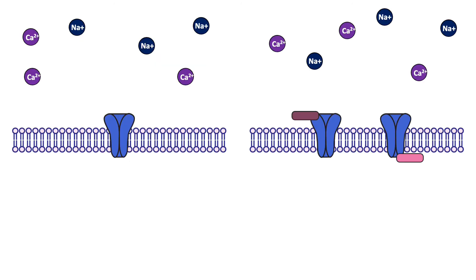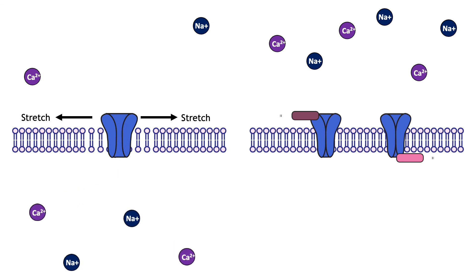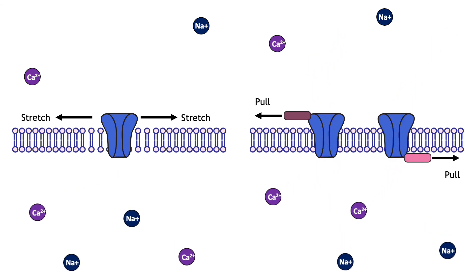In previous chapters we discussed ion channels gated by voltage changes and channels gated by neurotransmitters. In the somatosensory system we find ion channels that are gated by physical distortion or stretch of the membrane. These channels can open by stretch of the membrane itself or indirectly through movement of intra- or extracellular proteins linked to the channels. Sodium and calcium flow into the cell, causing both a depolarization and the initiation of second messenger cascades. If enough stimulus is applied, the depolarization reaches threshold of the axon and an action potential is sent toward the spinal cord.